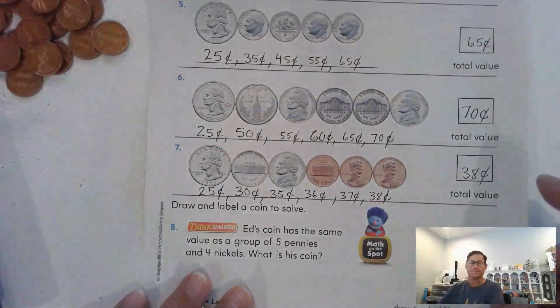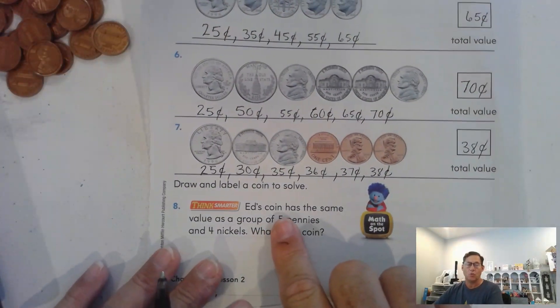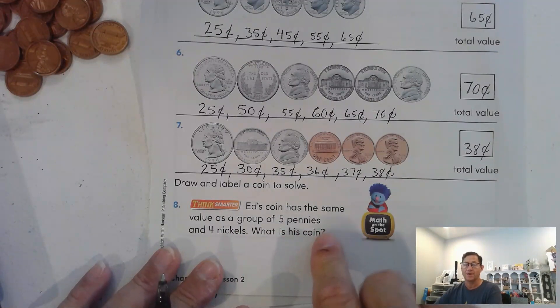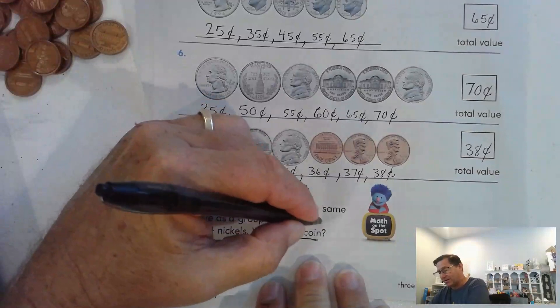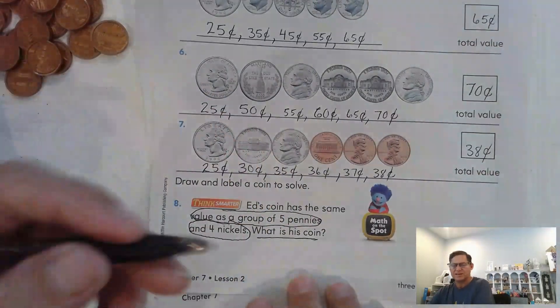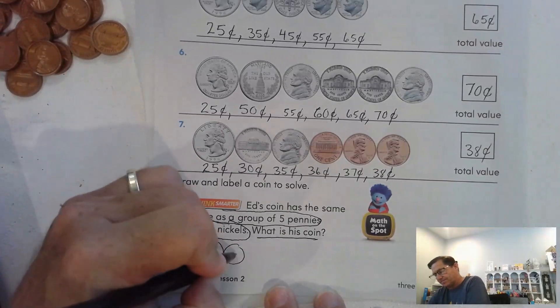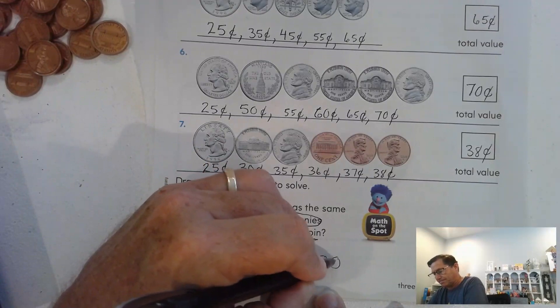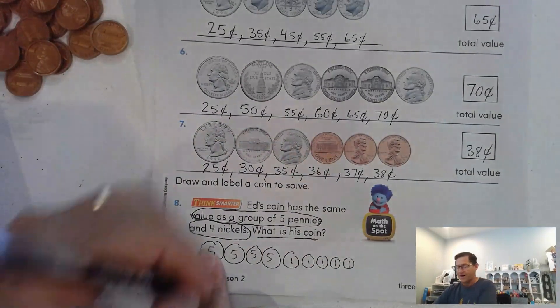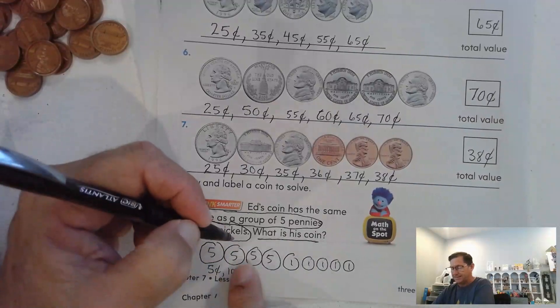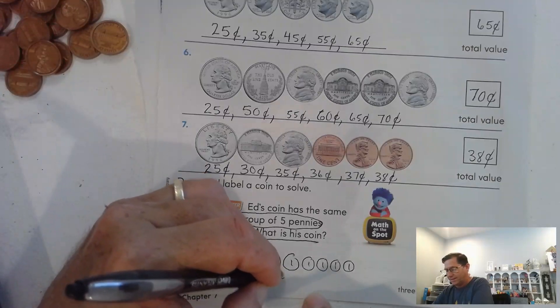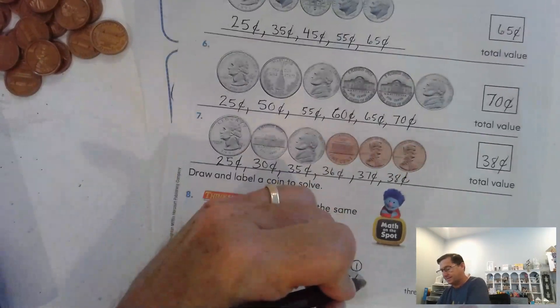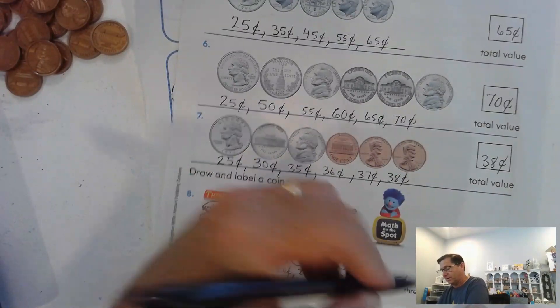Number eight. Draw and label a coin to solve. Ed's coin had the same value as a group of five pennies and four nickels. What is his coin? Let's figure that out. Four nickels and five pennies. Five cents, ten cents, fifteen cents, twenty cents, twenty-one, twenty-two, twenty-three, twenty-four, twenty-five cents.